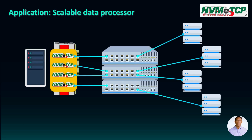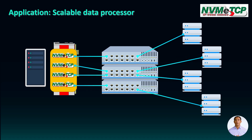The NVMe TCP protocol enables seamless sharing of data between hosts and targets over Ethernet, offering a streamlined solution for complex data processing tasks that require multiple offload engines. In this scenario, we assume the use of four NVMe TCP 25G IPs, allowing four engines to access the data source via Ethernet. The first engine reads the data from the source, processes it, and stores the result in new storage. With the ability to read data from multiple sources simultaneously, parallel processing by multiple engines is made possible. Once data processing is complete, the results can be returned to the same or different storage as required.